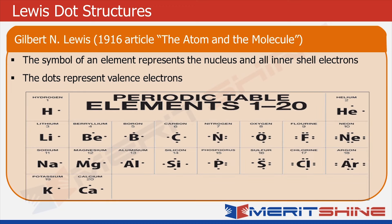The symbol of an element represents the nucleus and all inner electrons. Dots represent valence electrons, and valence electrons are the number of electrons in the outermost shell.